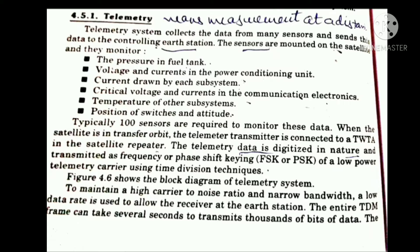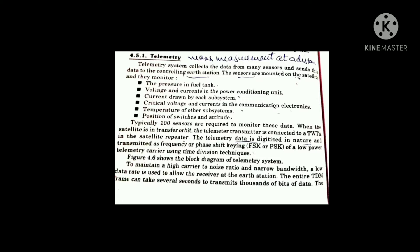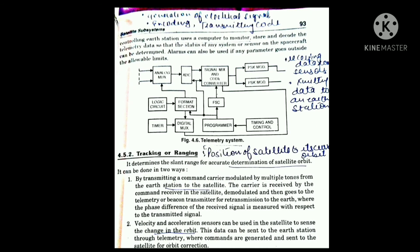When the satellite is in transfer orbit, the telemetry transmitter is connected to the TWTA in the satellite repeater. The telemetry data is digital in nature and the modulation techniques used are FSK or PSK. FSK is frequency shift keying and PSK is phase shift keying, used in the low-power telemetry carrier using time division multiplexing (TDM). Both techniques are digital and are used in satellite communication.